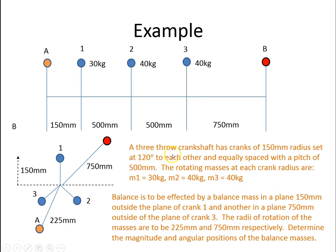So the question was, a three-throw crankshaft has cranks of 150mm radius set at 120 degrees to each other.